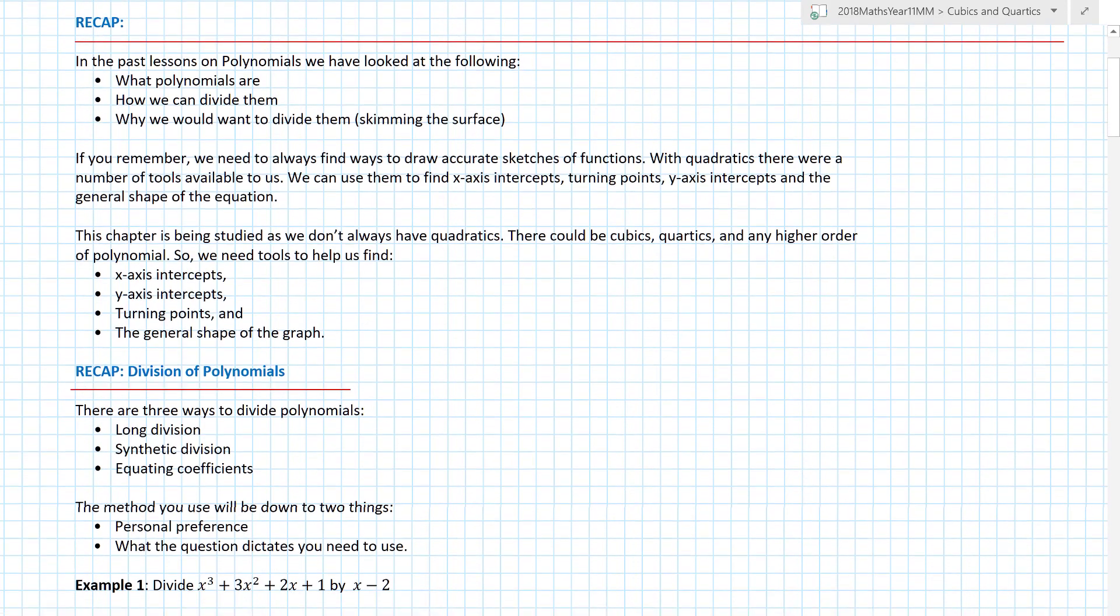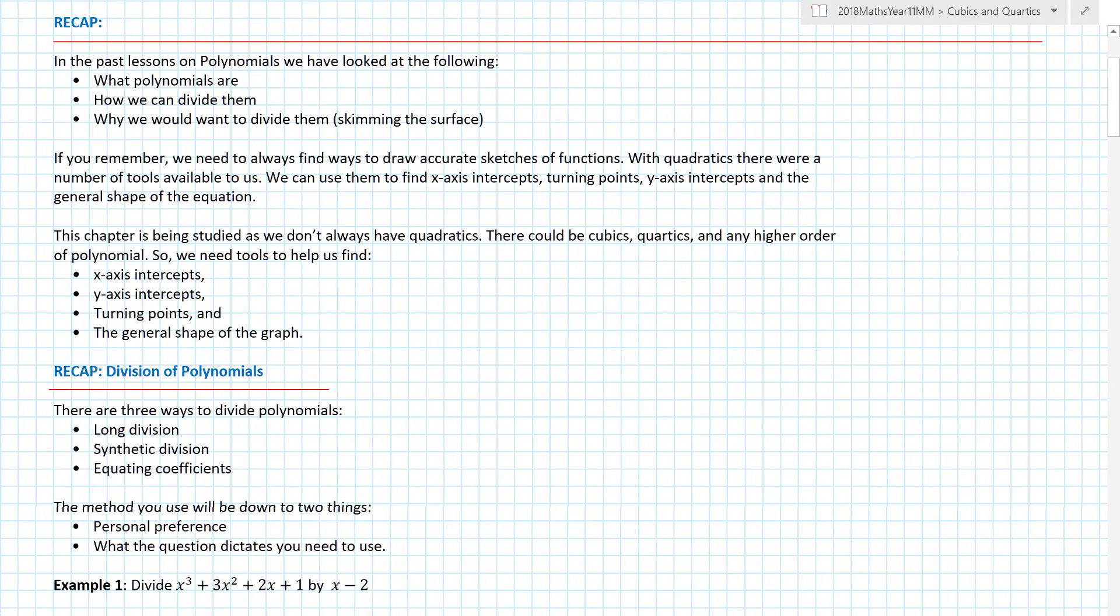We're going to recap. In the past lessons on polynomials, we have looked at the following: What polynomials are - remember, polynomials are just things with x to the fours, x to the threes, x squared, x's. It can be any of those, all of those, none of those. You can have x to the fives, x to the sixes, anything with those. How we can divide them - remember there were three ways of being able to do it and why we would want to divide them, in which case we skim that surface.